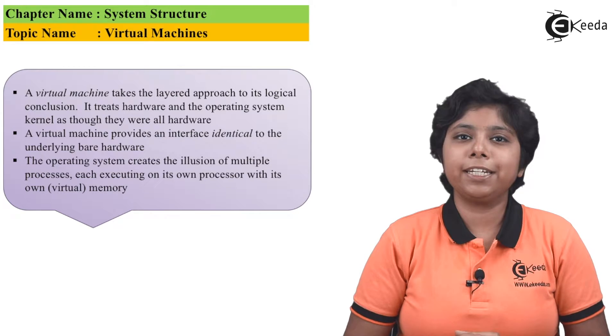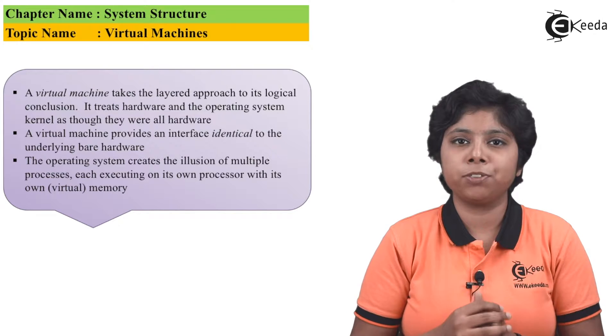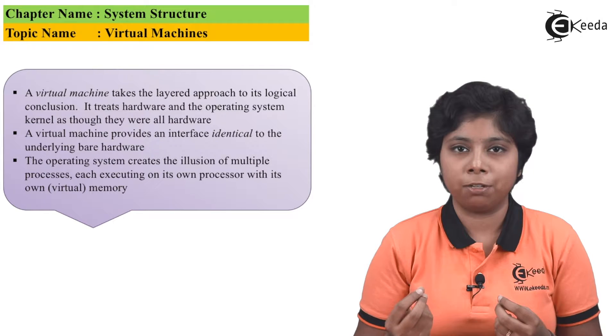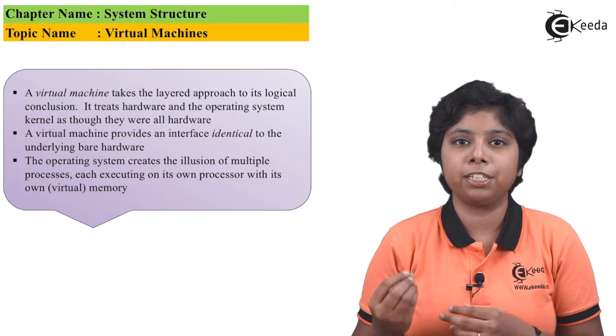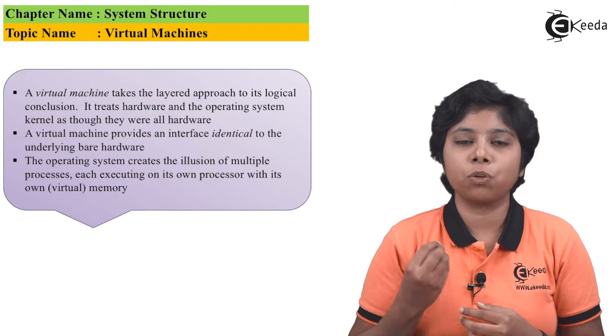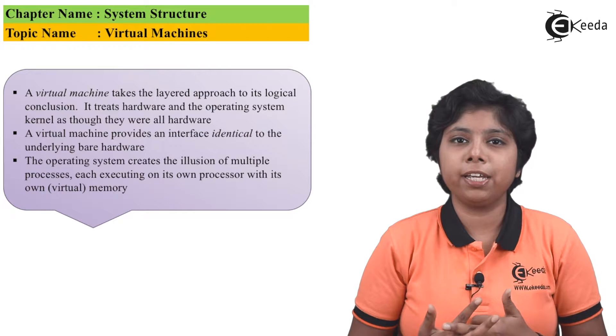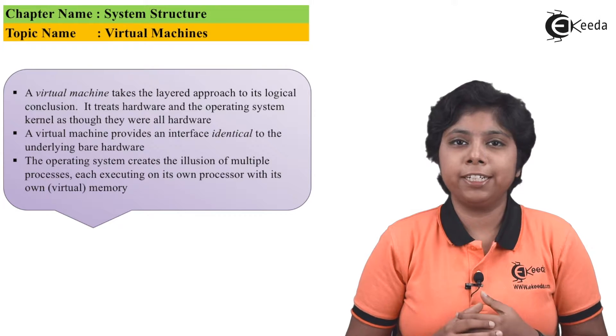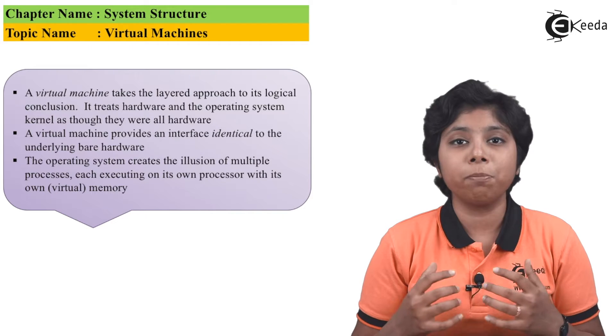The key idea behind using virtual machines is to provide an abstraction of single hardware into several different execution environments, thus creating the illusion that each separate execution environment has its own programmable computer. By using CPU scheduling and virtual machine techniques, we create the illusion that each process has its own processor and memory.